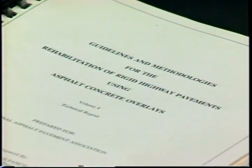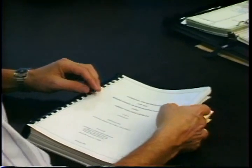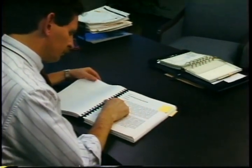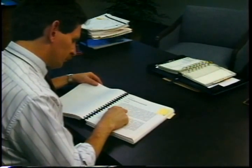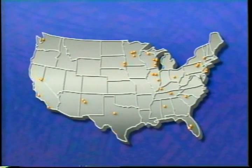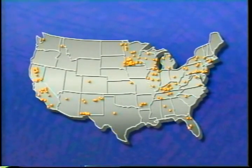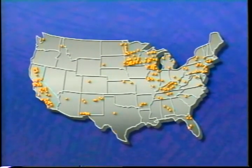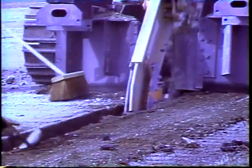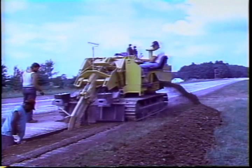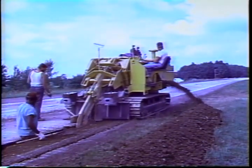The National Asphalt Pavement Association, in conjunction with nineteen state asphalt pavement associations, contracted with PCS Law Engineering to research and produce guidelines and methodologies for the rehabilitation of rigid highway pavements using asphalt concrete overlays. The PCS Law Report reviewed a total of 487 concrete pavement projects in 34 states to develop design methodologies and construction criteria. The report substantiates that any rehabilitation technique requires consideration of proper drainage, and attention to drainage problems is essential for rehabilitation to be fully effective.